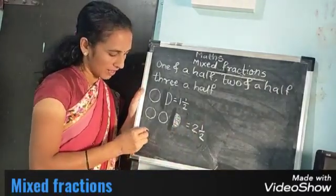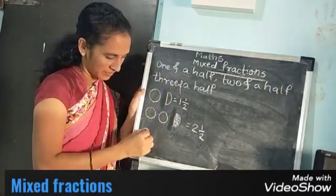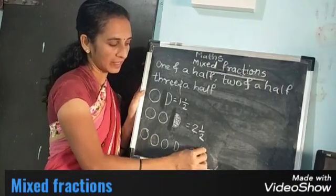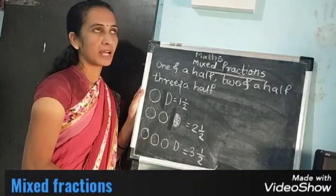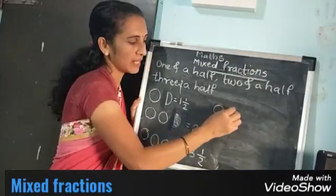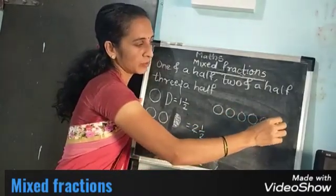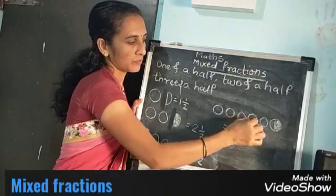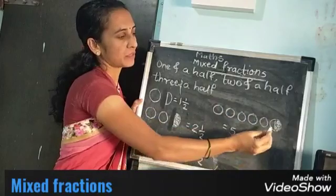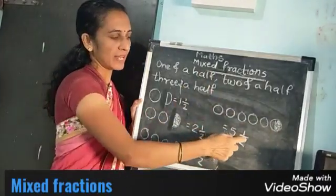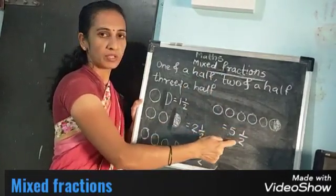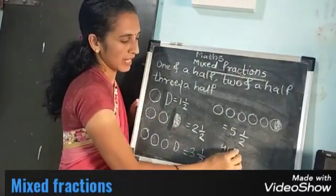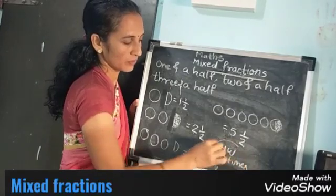Now, three and a half. Three are the full figures and half — how to write: three and one upon two. Another example: can you make five and a half? One, two, three, four, five full figures. Make two equal parts of a figure and select one part. Write the fraction: five are full, and out of two equal parts, one is selected. Five and a half, or five and one upon two. Your homework is to write this two times in your notebook.